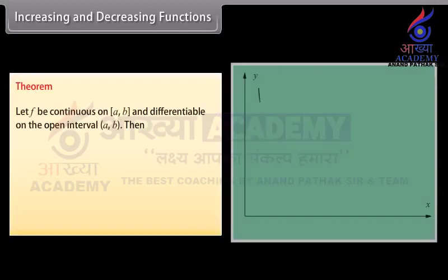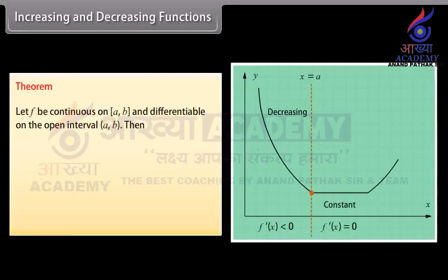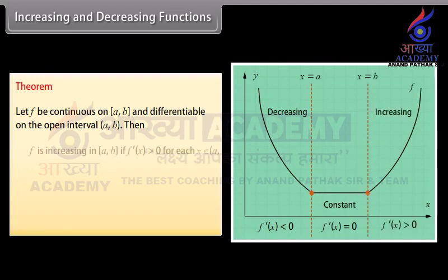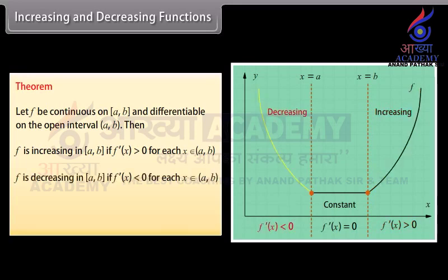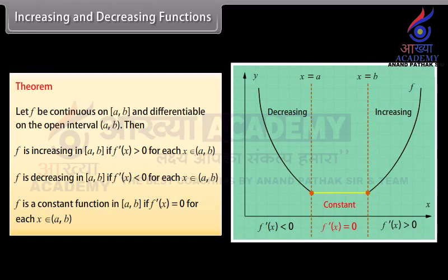Theorem: Let f be continuous on a closed interval [a, b] and differentiable on the open interval (a, b). Then f is increasing on [a, b] if f dash of x is greater than 0 for all x in (a, b); f is decreasing on [a, b] if f dash of x is less than 0 for each x in (a, b); and f is a constant function on [a, b] if f dash of x equals 0 for each x in (a, b).